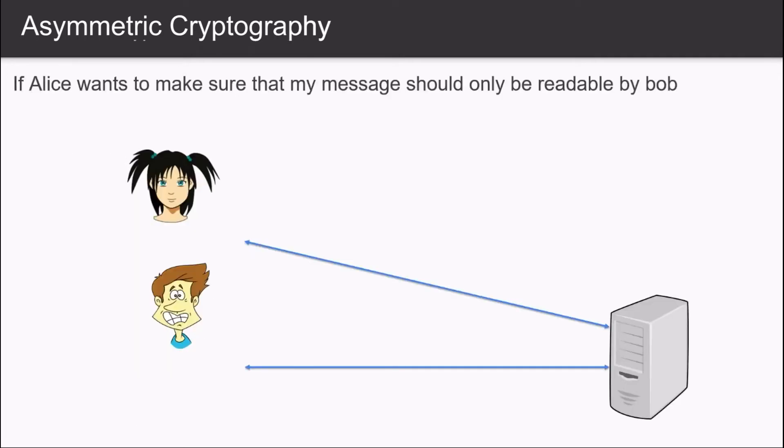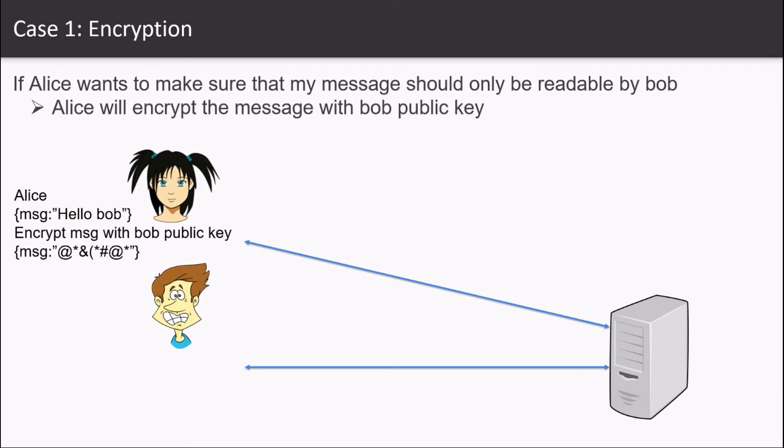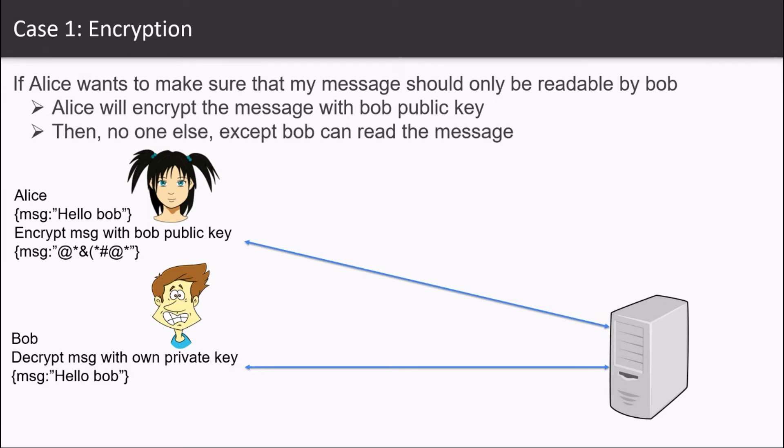Case 1: Encryption. If Alice wants to make sure that my message should only be readable by Bob, then Alice will encrypt the message with Bob's public key. Then no one else, including Alice, can read or decrypt this message except Bob. Because the message was encrypted by Bob's public key and it can only be decrypted by Bob's private key which is only stored with Bob. If someone else tries to decrypt the message with their own private key, they will read nothing except garbage.